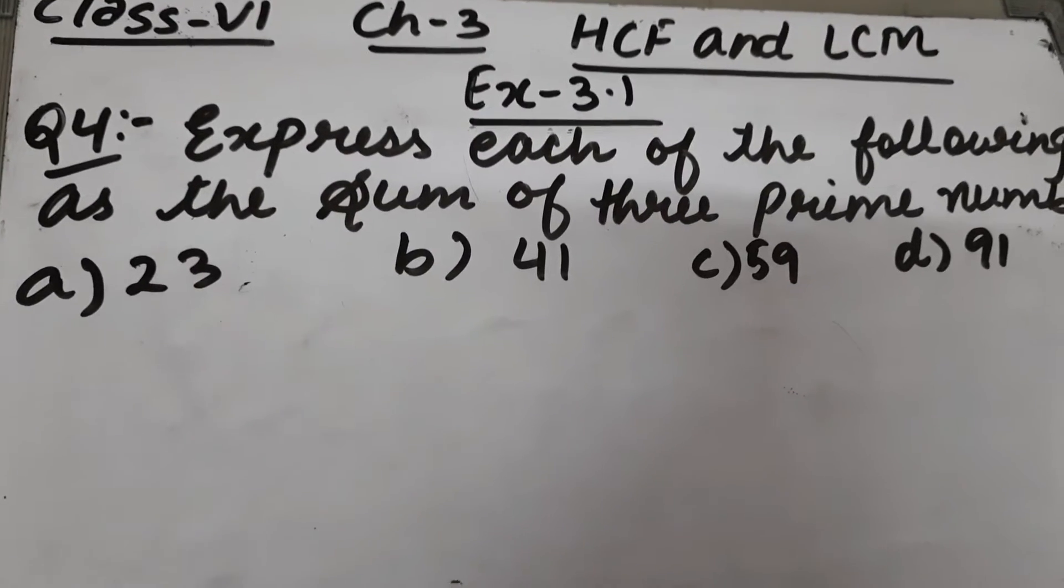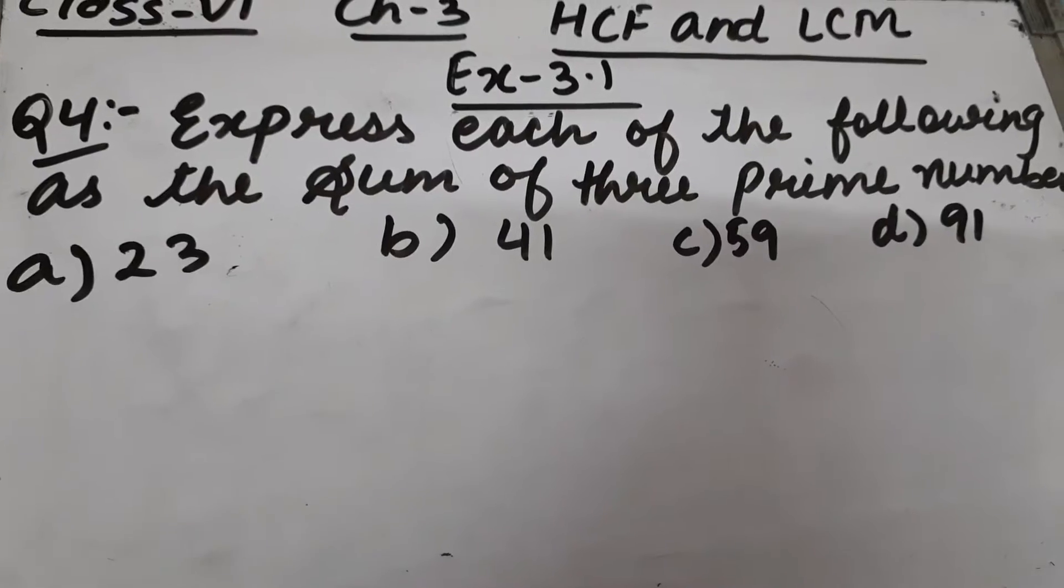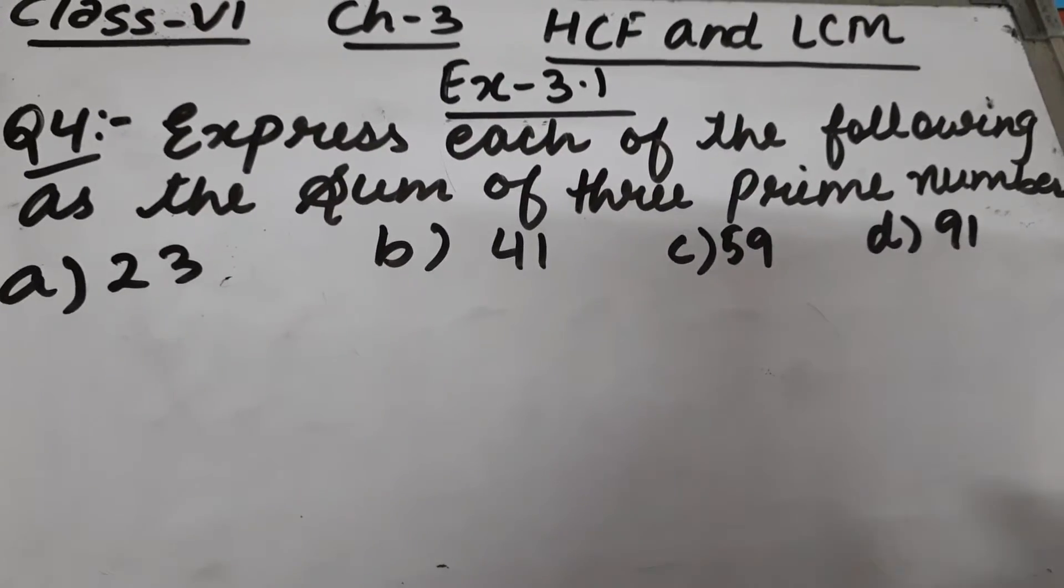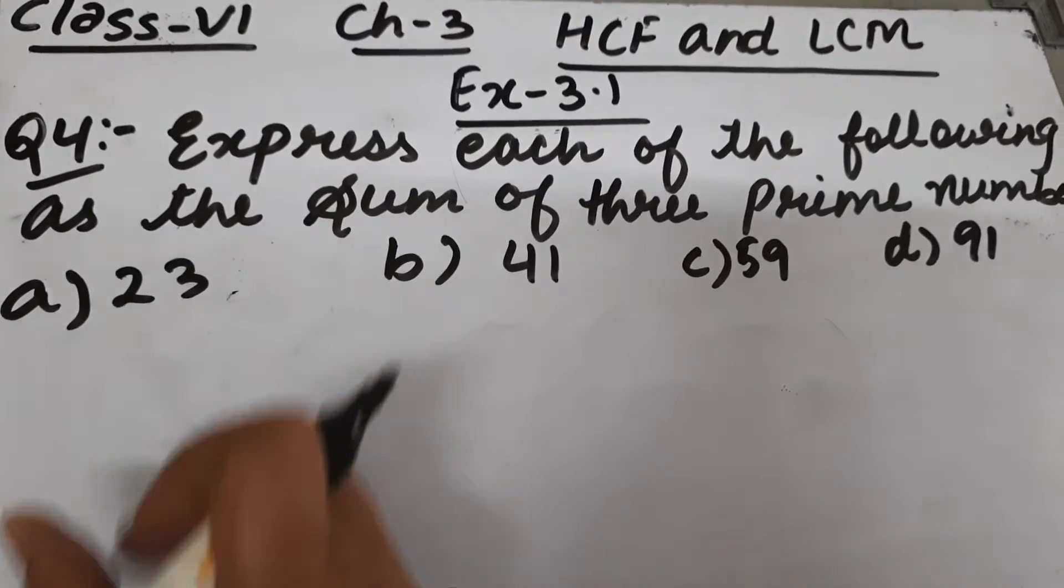Let's start question number fourth of exercise 3.1. The question is: express each of the following as a sum of three prime numbers. How do we represent them as a sum of three prime numbers?